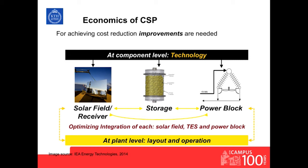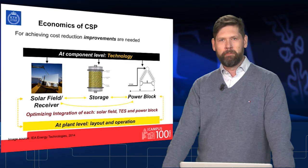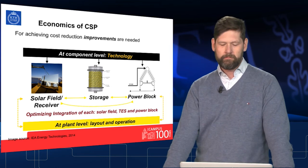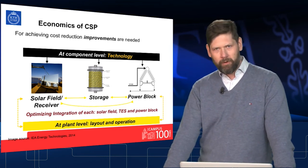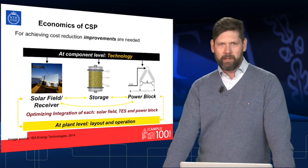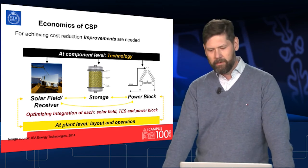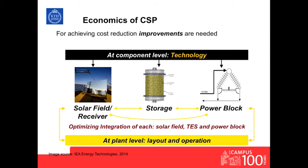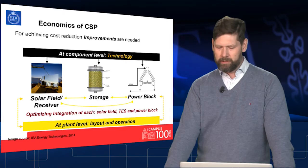We also need to develop new storage technologies that can store heat at higher temperatures, which will improve the efficiency of the whole thermal process and enable electricity production at lower cost. We also want to work on the power block — the conversion technology, the steam turbine or Stirling engine. Improving efficiency there will also allow us to produce power at smaller cost levels.